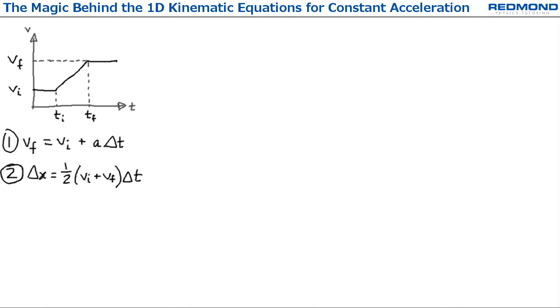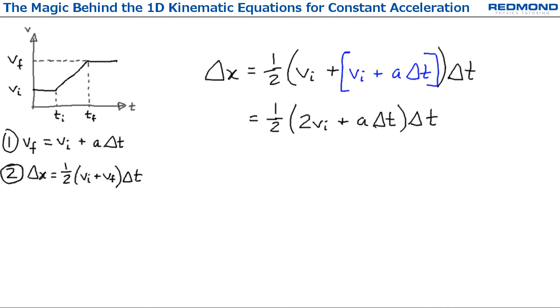For the third equation, I substitute the first into the second to get delta x is equal to one half of Vi plus Vi plus A delta T times delta T, and then simplify to get the third equation: delta x is equal to Vi delta T plus one half A delta T squared.